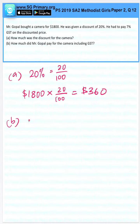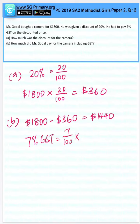So let's find the discounted price first. By taking $1,800 minus $360 will give us $1,440. 7% GST on this amount, 7 out of 100 times $1,440,